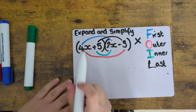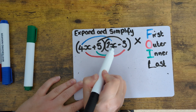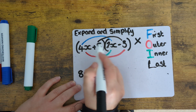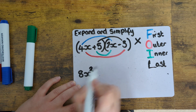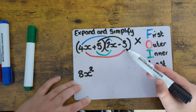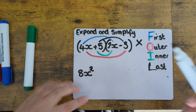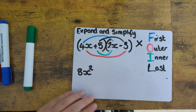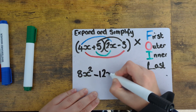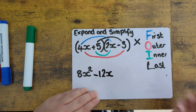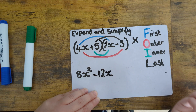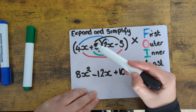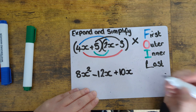Starting with the first terms, we need to do 4x times 2x. So 4 times 2 is 8, and because we're doing x times x, that would be squared. Then we do the outer terms — 4x times minus 3. We can pretend the negative sign isn't there and do 4 times 3, which is 12, then add the negative sign and the x. Now we're doing 5 times 2, which is 10x, and this x is positive so we need a plus sign. And then finally 5 times minus 3, which would be minus 15.